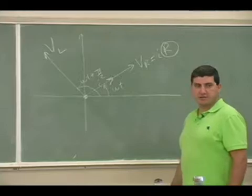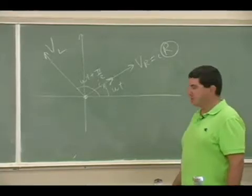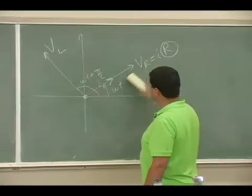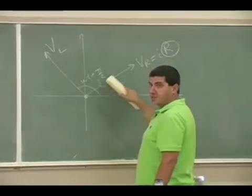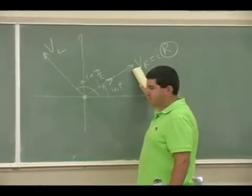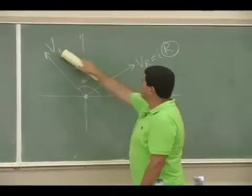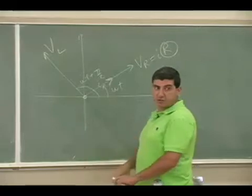So in an RL circuit, I don't have the C, Vc. So I just have voltage of the resistor. I have the current. The current is going to be in phase with the voltage of the resistor, and I have voltage of the inductor. How do these add up, voltage of the resistor and the voltage of the inductor?